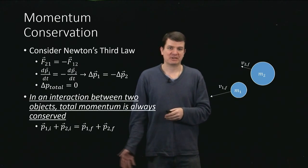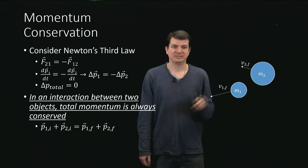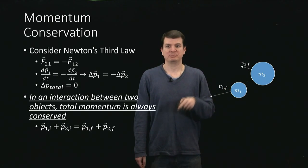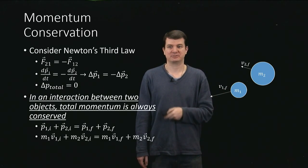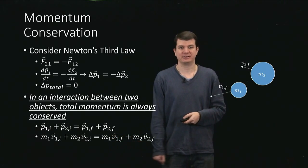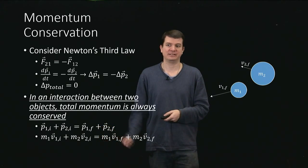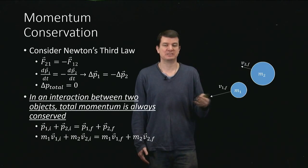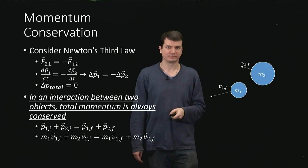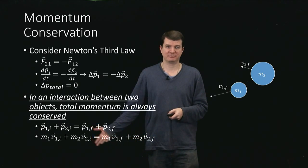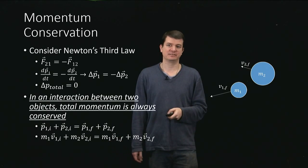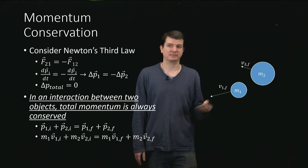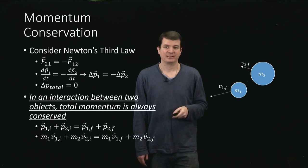And what the conservation of momentum allows us to do is to immediately write down a relationship between those initial velocities and the final ones, according to this expression down here. And all we've done, really, is to put in the actual definition of what momentum represents. Remember, p is just m times v. So from this, if we knew any three of the velocities, we would be able to predict the fourth one.